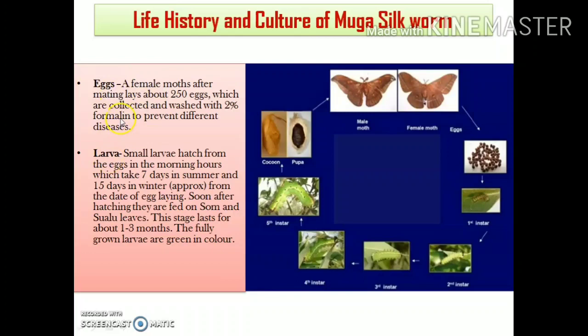A female moth generally lays about 250 eggs after mating. These eggs are collected and sterilized with 2% formalin to prevent diseases. It takes about 7 days in summer and 15 days in winter for the eggs to hatch and the small larvae to emerge.